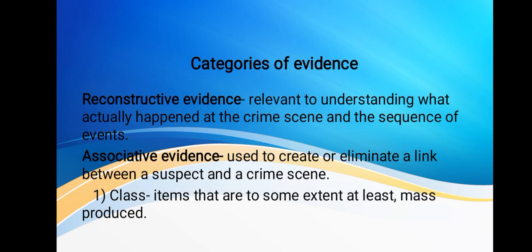Moving on to the categories of evidence — the first is reconstructive evidence. This is evidence used to understand what actually happened at the crime scene and the sequence of events, essentially recreating or reconstructing what happened. Blood spatters, bullet holes, etc. can help determine exactly how the victim was attacked, including the number of blows and the position of the victim.